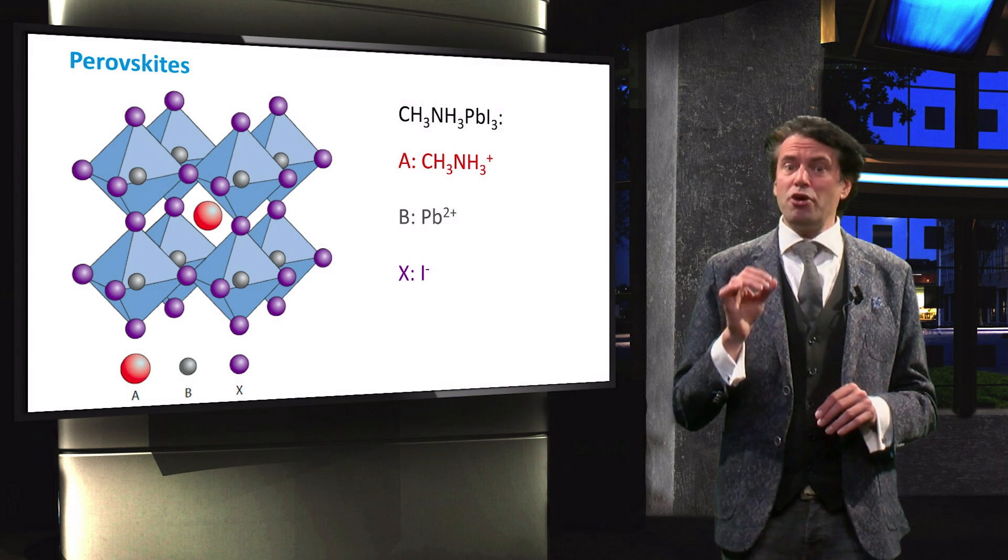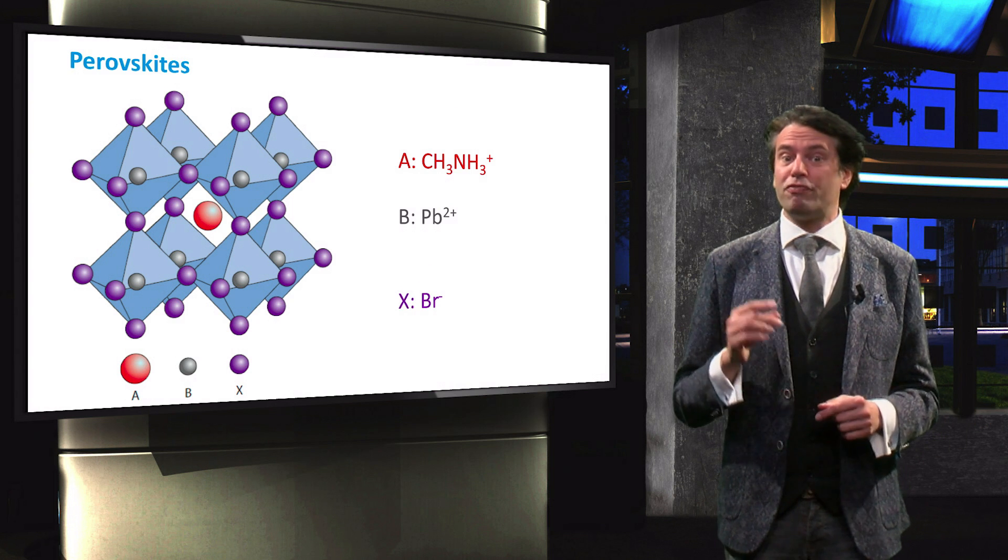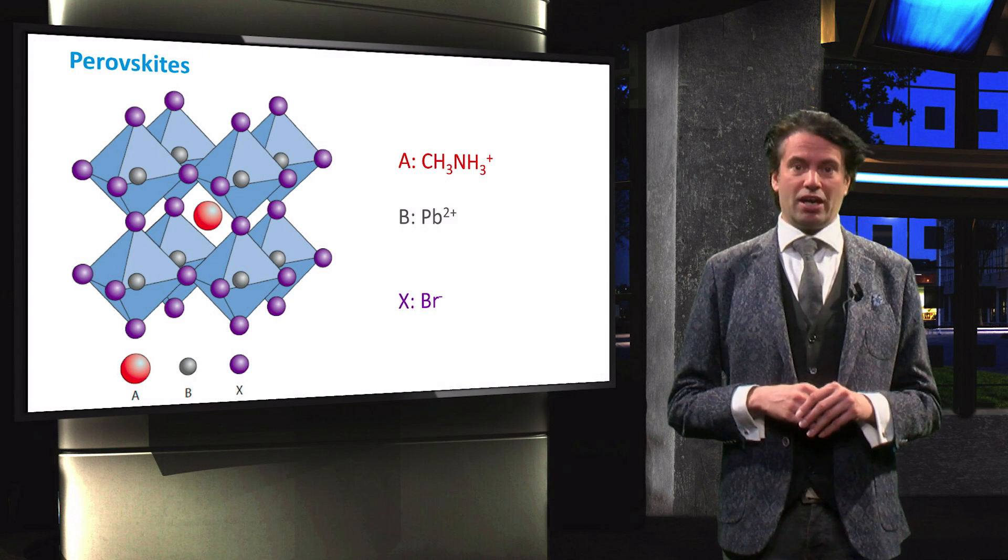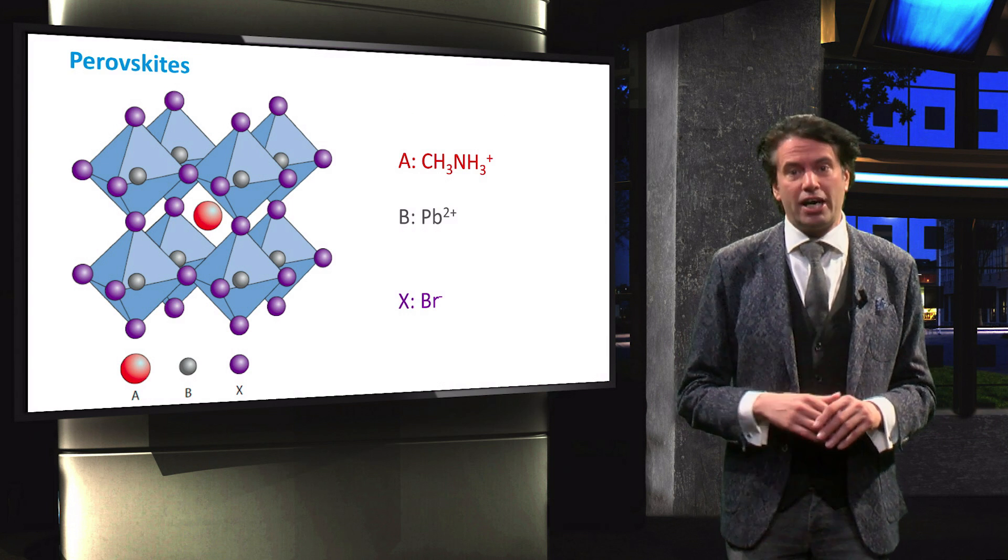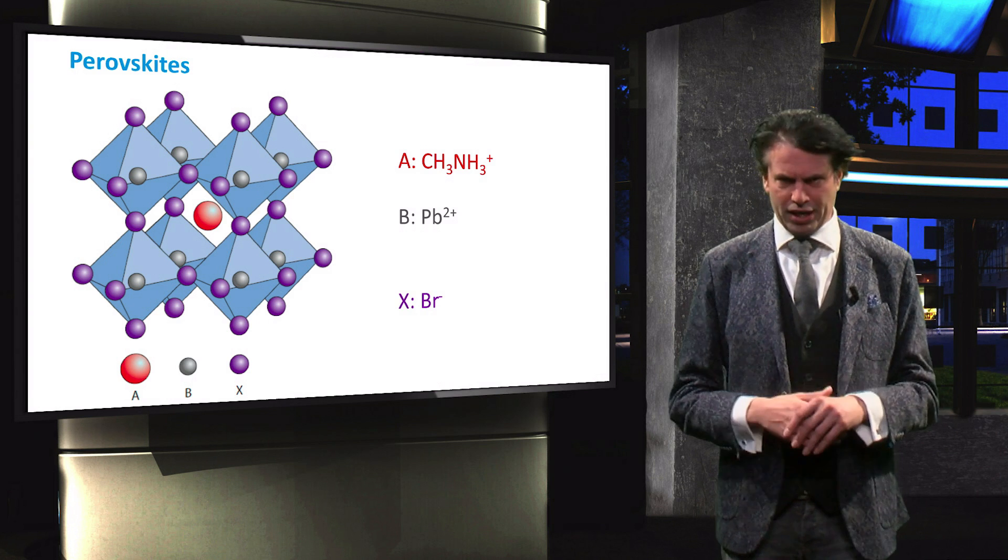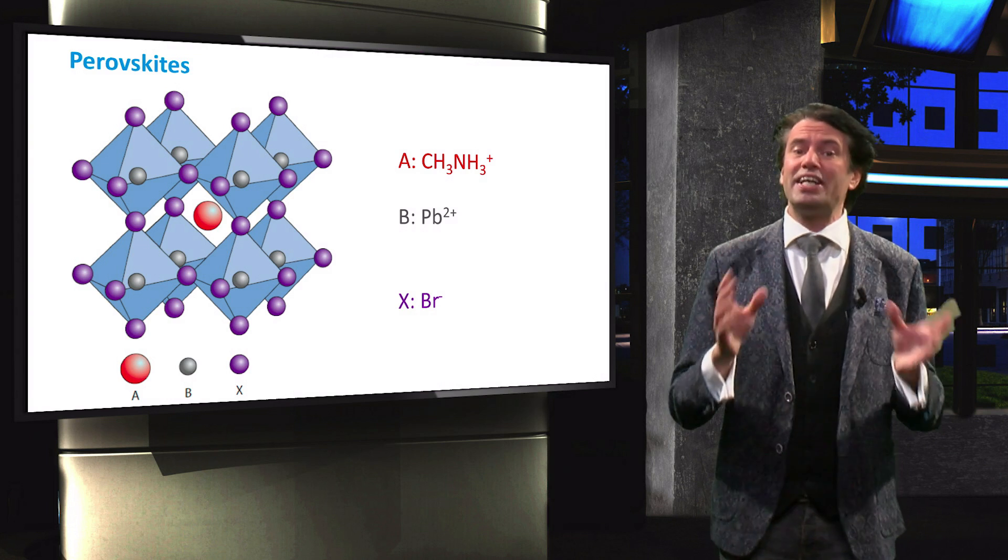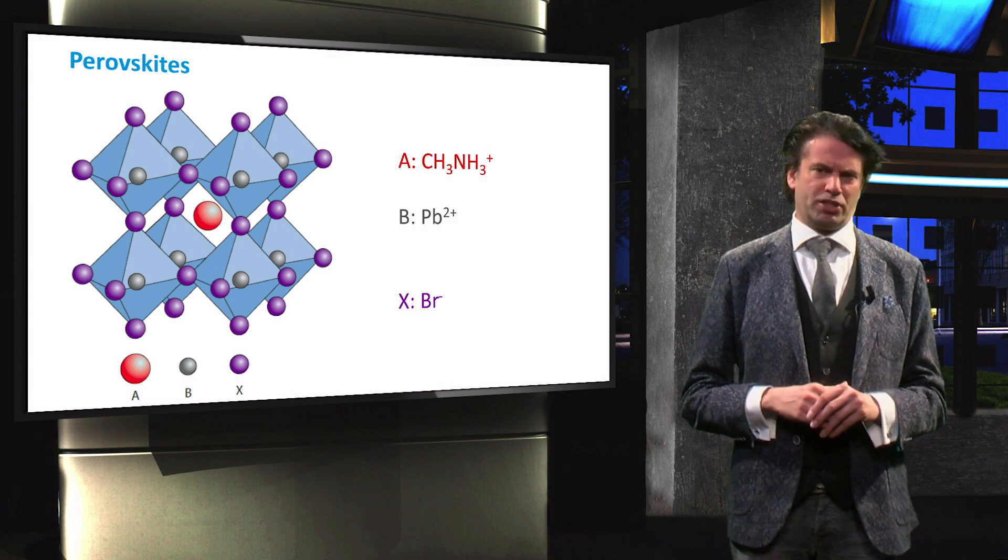However, when the iodide is replaced with bromide, the bandgap can reach values up to 2.3 eV. A mixed composition of iodide and bromide can result in a bandgap between 1.5 and 2.3 eV. Perovskite can therefore have a bandgap that is within the optimal bandgap range for a top cell.